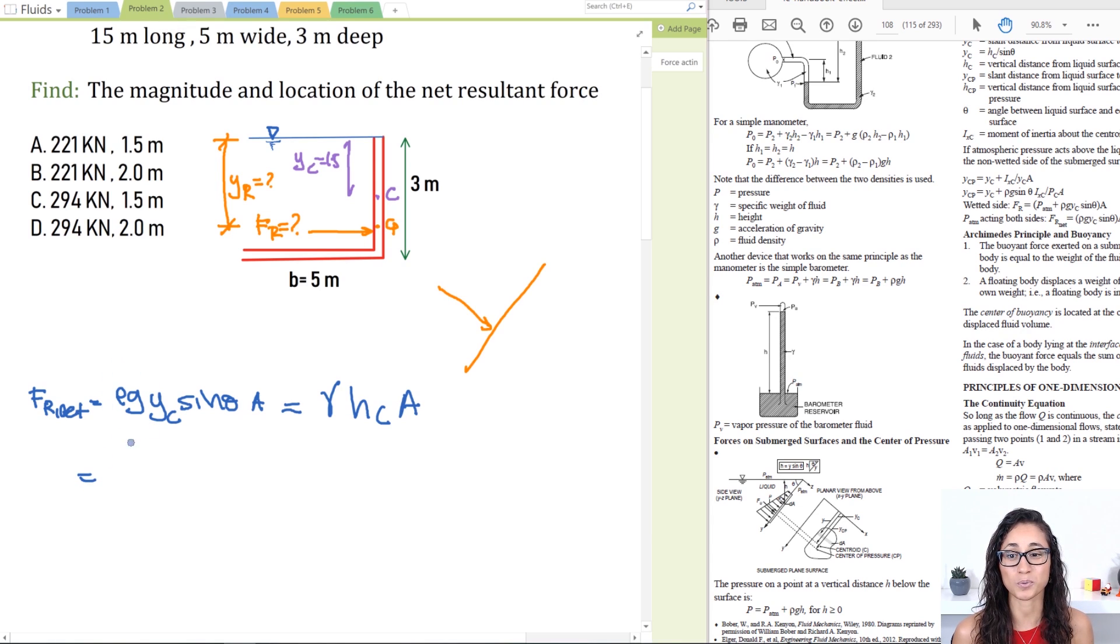So I'm going to still replace this by the unit weight of the water because it's just easier to deal with. Then we have yc sine theta times the area. Now the unit weight of the water is 9.81 kilonewtons per cubic meter. Yc times sine theta, because we have a flat surface we have 90 degrees here, sine 90 is one, and yc is equal to 1.5, so I'm going to write 1.5 meters times sine 90 degrees.